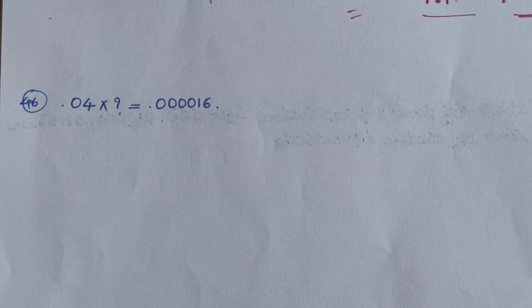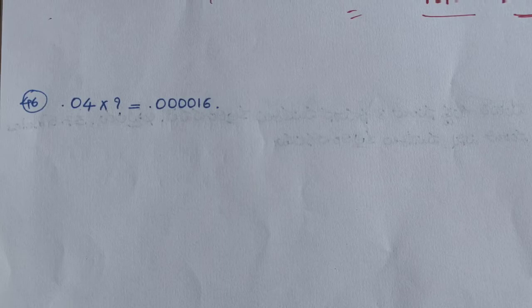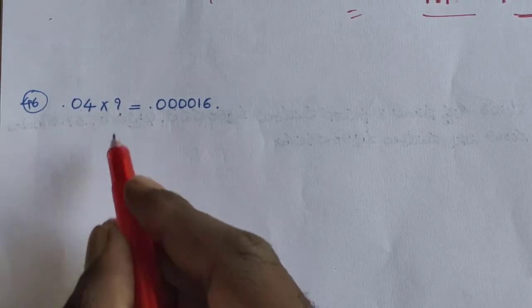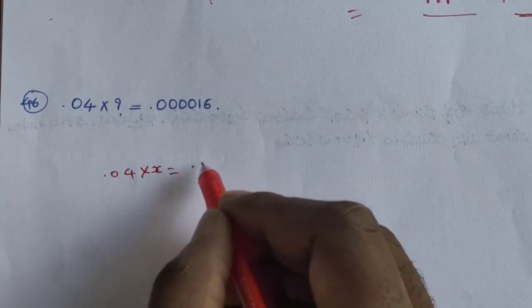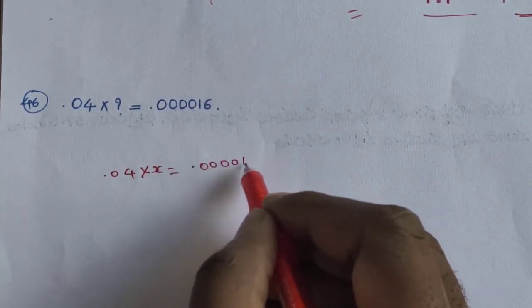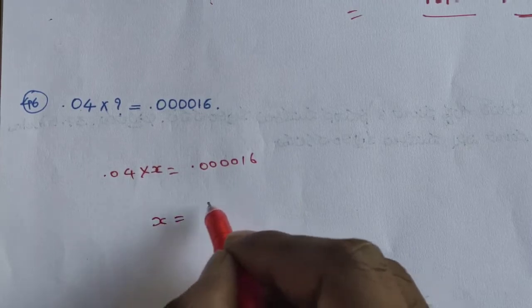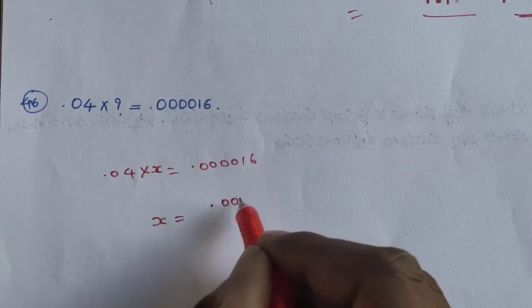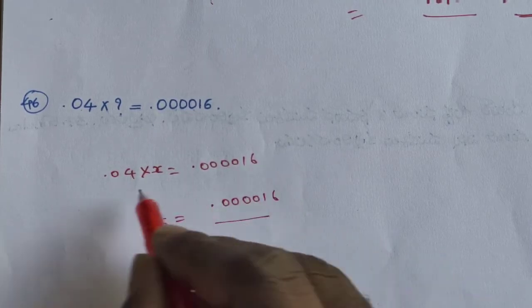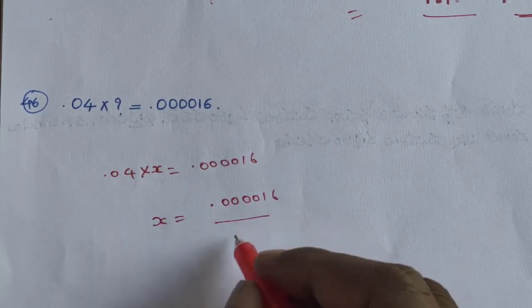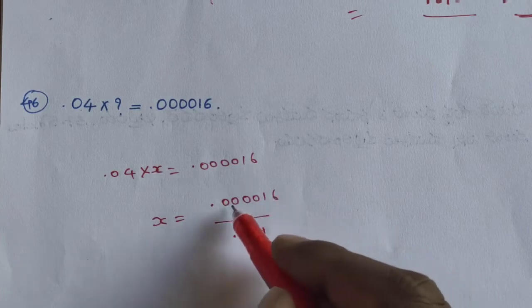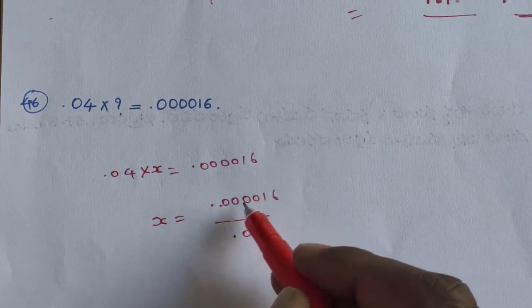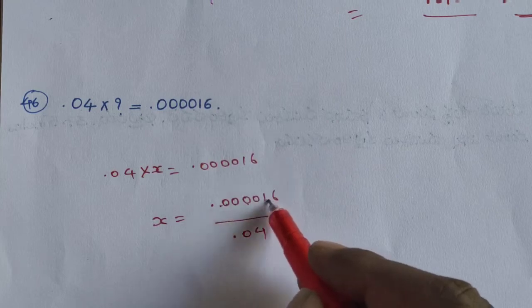Question: 0.04 times question mark equals 0.000016. Here, question mark is x. So: 0.04 into x equals 0.000016. Therefore x equals 0.000016 divided by 0.04. Count decimal places: 1, 2, 3, 4, 5, 6.